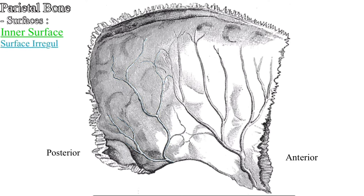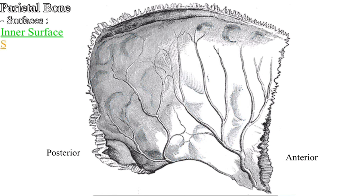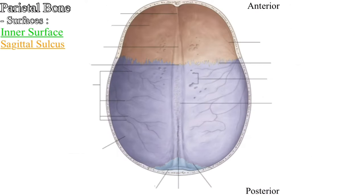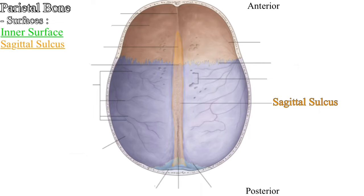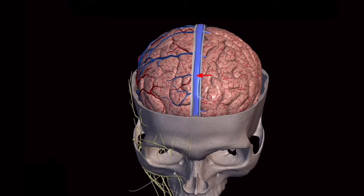Second is the surface irregularities. The inner surface is not smooth like the outer surface; instead it has pits and folds produced by the gyri of the brain. Next is the sagittal sulcus. Close to the superior border on the inner surface is present a half groove. When both parietal bones are joined together you will see the full sagittal sulcus — half contributed by each parietal bone — and in this sagittal sulcus is present the sagittal sinus.